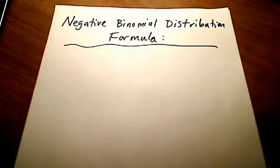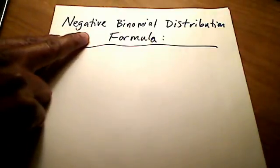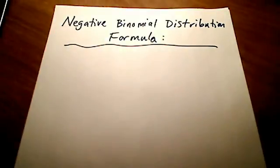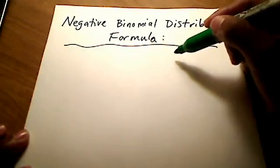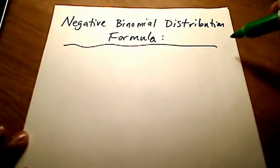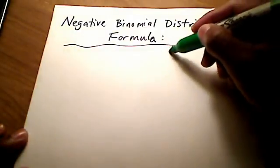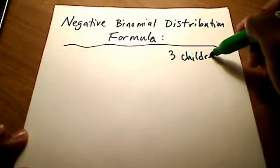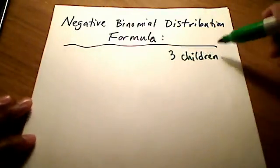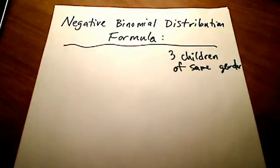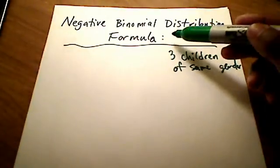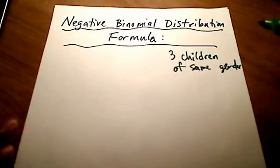In this video I want to explain how the negative binomial distribution works using the formula. In a previous video I showed you how the negative binomial distribution works, drawn out and explained. The example in that video was a family — a husband and wife team looking for three children of the same gender. They were going to stop having children until they reached three children of the same gender. This video is now an explanation of that scenario using the formula for negative binomial distribution.